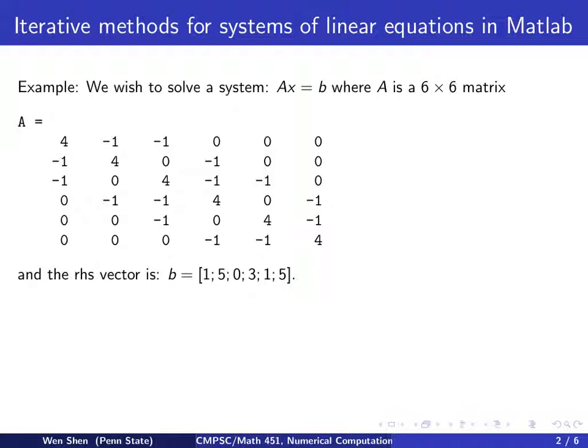And we choose the right-hand side vector b to be this value. So that's a column vector. And one can show or verify that the exact solution is 1, 2, 1, 2, 1, 2. So it becomes a bit easier for us to see if our iteration converges.